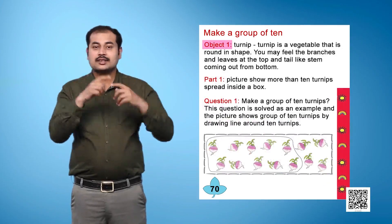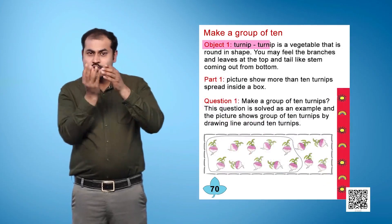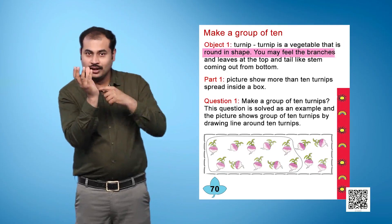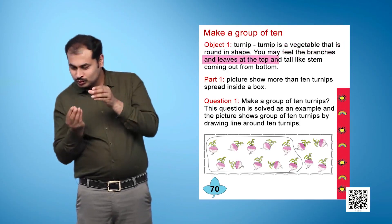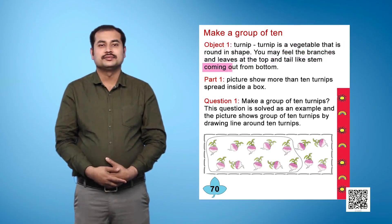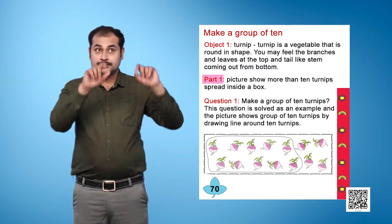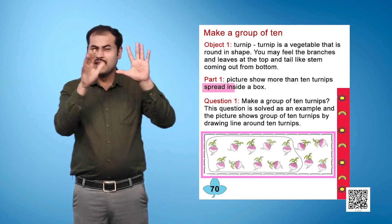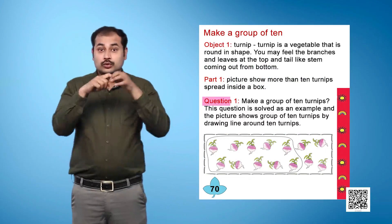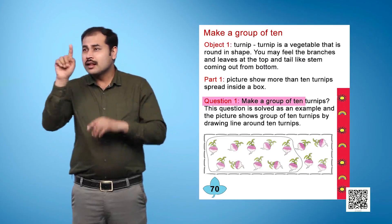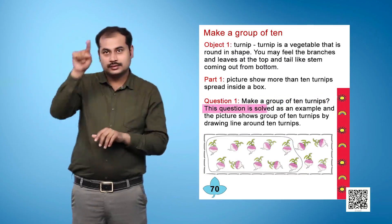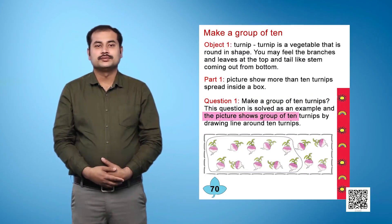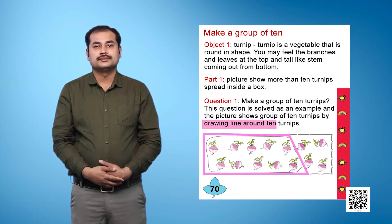Object 1: Turnip. A turnip is a vegetable that is round in shape. You may feel the branches and leaves at the top and a tail-like stem coming out from the bottom. Part 1 picture shows more than 10 turnips spread inside a box. Question 1: Make a group of 10 turnips. This question is solved as an example, and the picture shows a group of 10 turnips by drawing a line around 10 turnips.